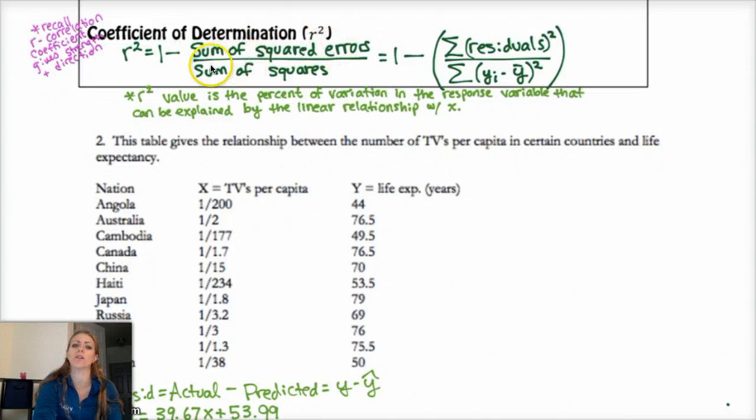And again, you don't need to be able to calculate this, but you do need to understand that if every single point lies on the line, the sum of the residual squared is going to be zero because every point lies on the line, which means the residual is zero, which means r squared would be one, which means it's a perfect fit. And basically this means the r squared value is the percent of variation in the response variable that can be explained by the linear relationship with x. And so if all the points are on the line, then 100% of the variation in the response variable can be explained by the linear relationship with x.